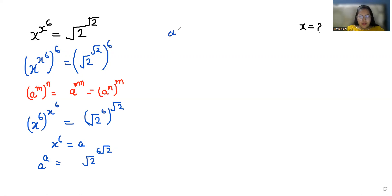Now a^a equals (√2)^(6√2). 6√2 we can write it as 3 times 2√2. Now again I'm going to use this identity. So a^a equals (√2^3)^(2√2).